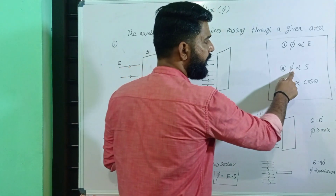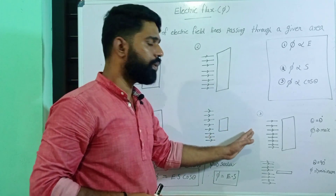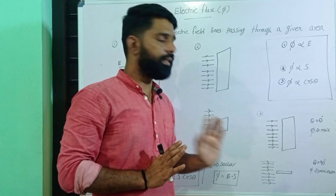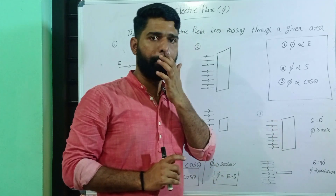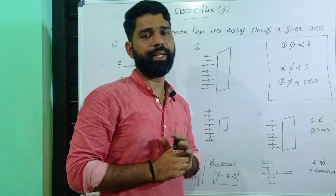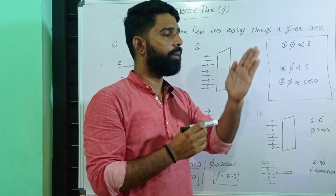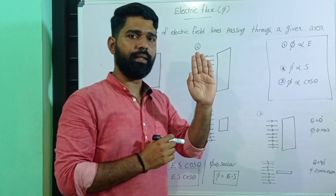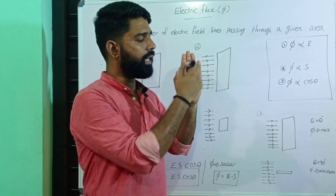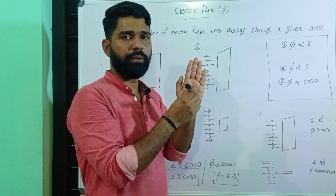But we reduce the surface area. The area vector is perpendicular to the plane of the surface. This surface area vector is in the direction perpendicular to the plane of the surface. So the area vector is always perpendicular to the plane of the surface.